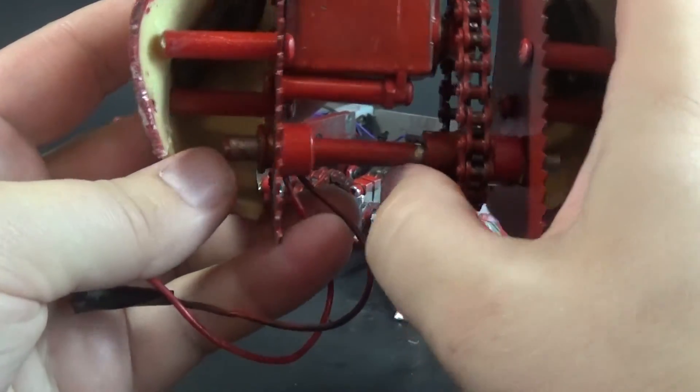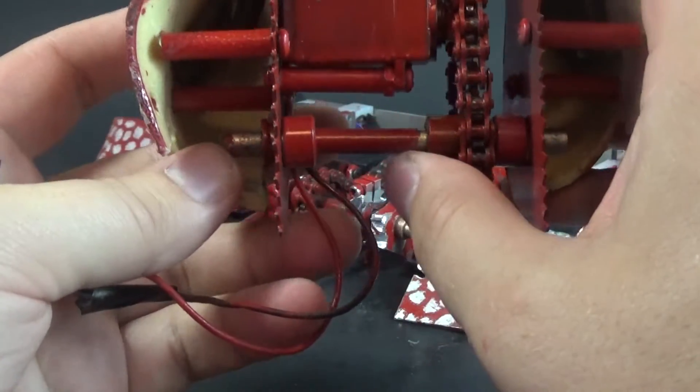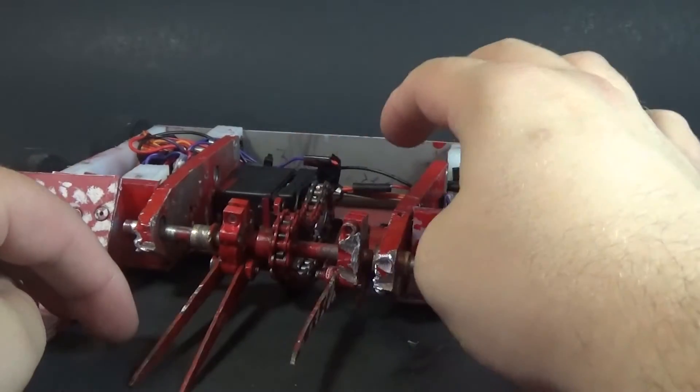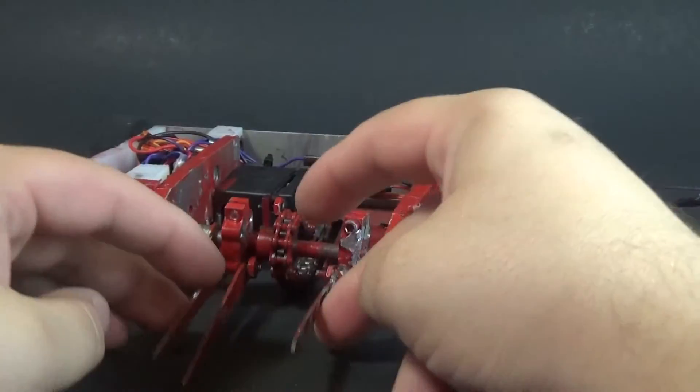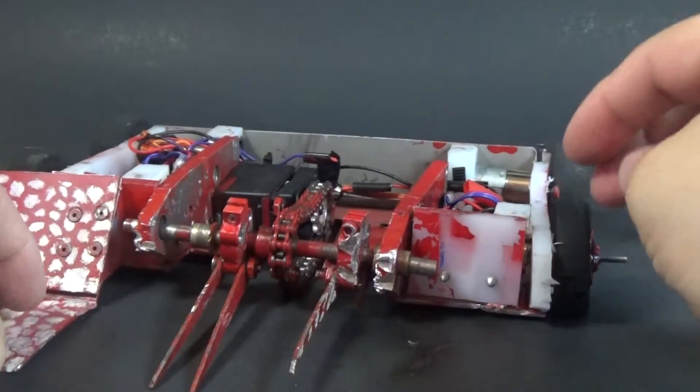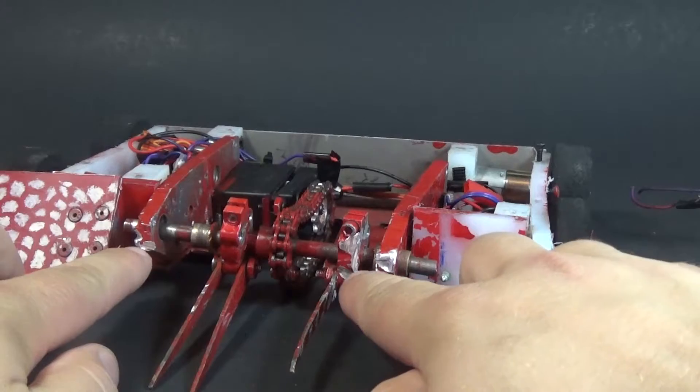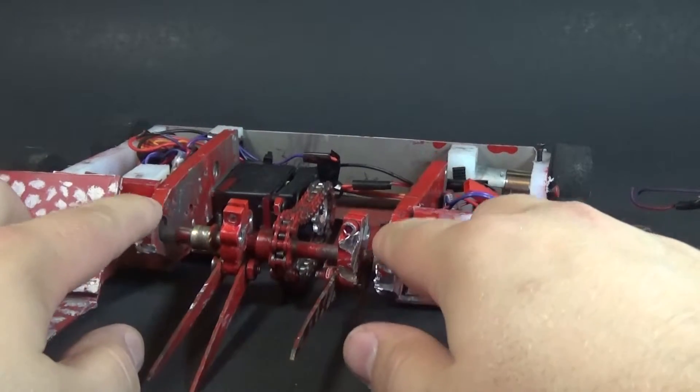The entire front end of the robot got ripped off. The servo for the lifting mechanism was actually destroyed in the process. You can see there's some nice gashes here in the quarter inch aluminum frame rails. There's a frame rail back here that holds the servo in place and the impact actually ripped that out of the bot.